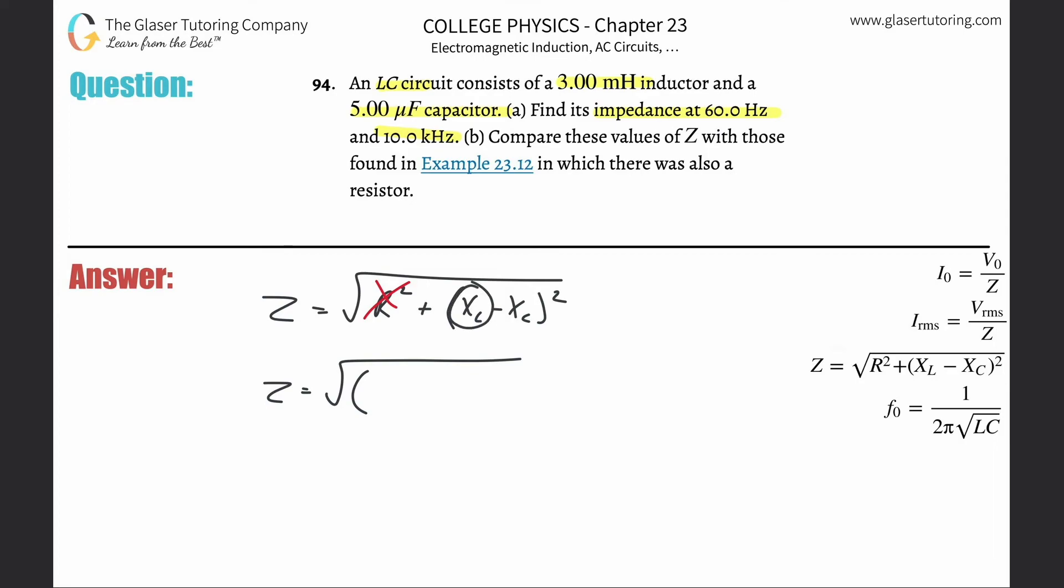So the inductive, or the reactive inductance was 2π multiplied by the frequency times the inductance. And that's going to be minus now the reactive capacitance, which is 1 over 2π times the frequency multiplied by the capacitance, okay? And now this whole thing is going to be squared, right? The whole difference here.